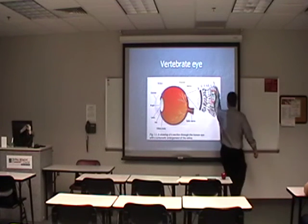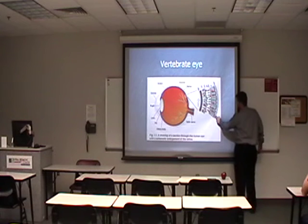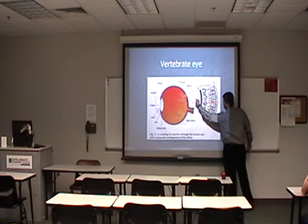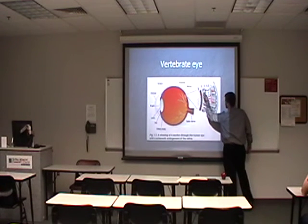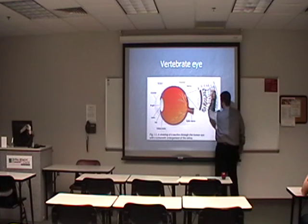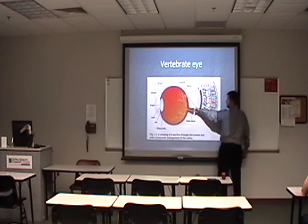These are the cells responsible for picking up light. So for light to get to your eye — for you to see — it has to move through the blood vessels and the nerves, and then hits the photoreceptive cells.